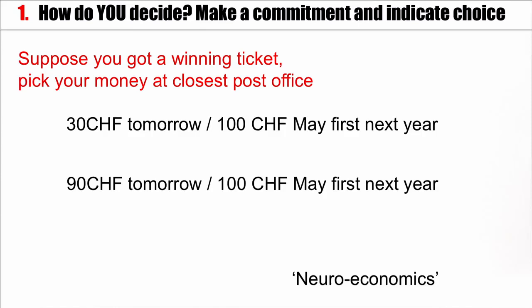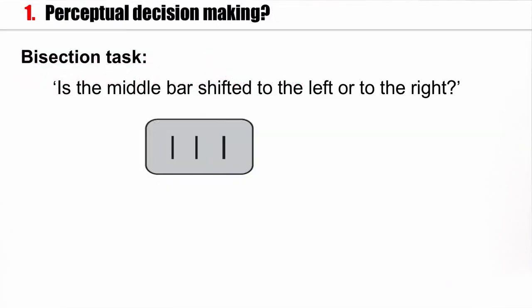And this decision making is based on neurons. You can look at the neural activity during this kind of decision making. But these are very specific decisions, decisions involving money. We'll more look at simpler decisions, decisions that are related to perception. For example, I can show you three bars, three vertical bars. And the question is, is the middle bar slightly shifted to the left or to the right?